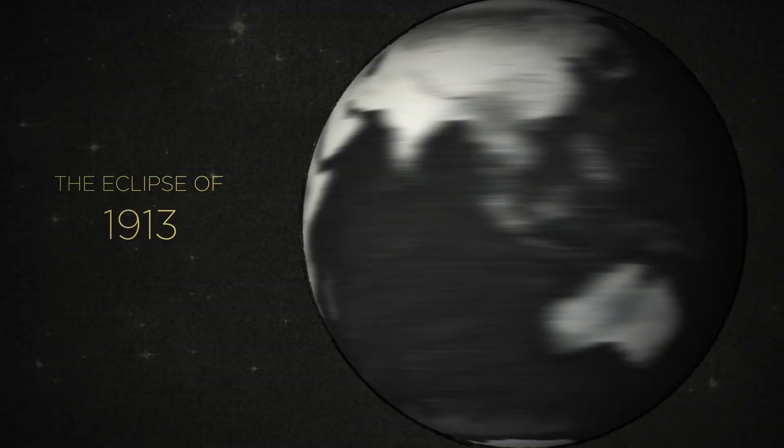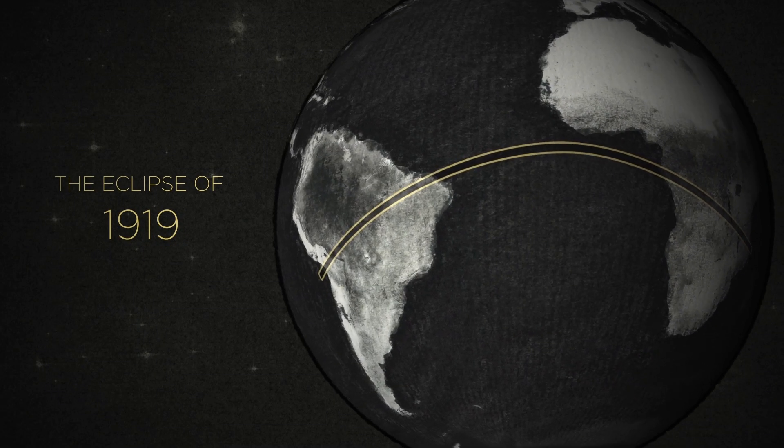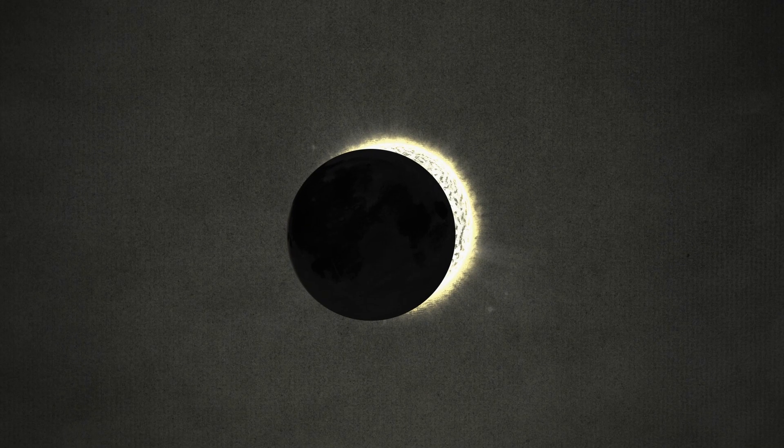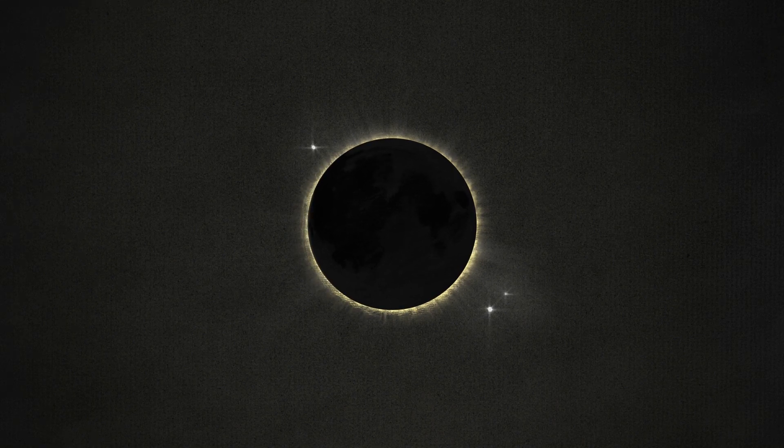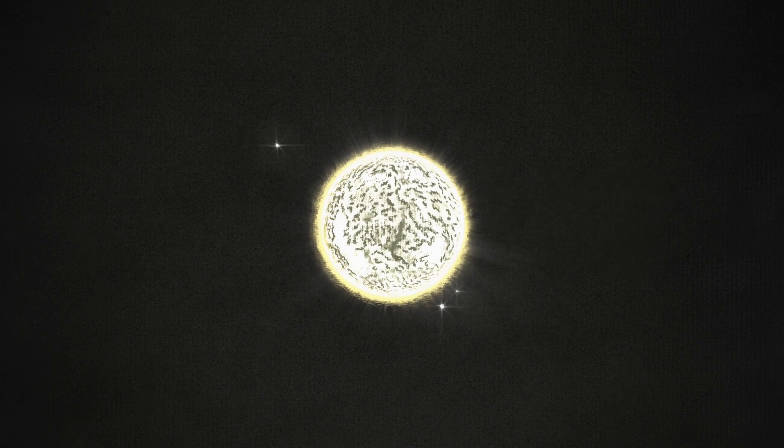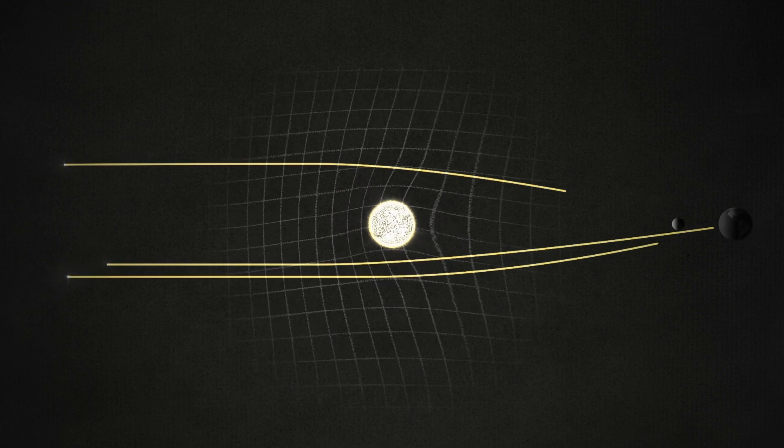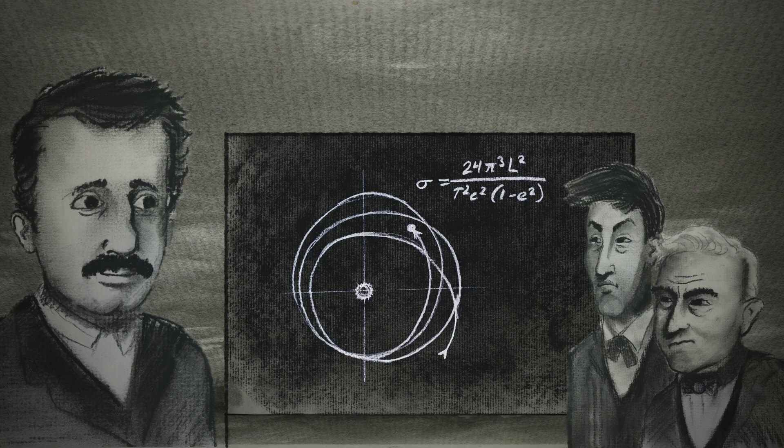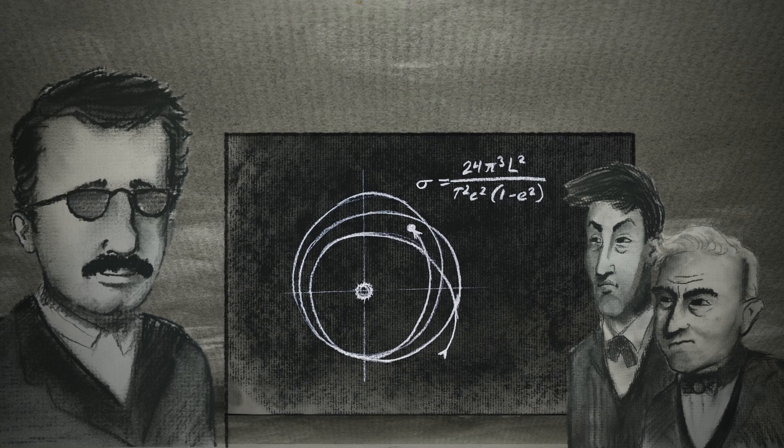And once again, an eclipse came in useful. In 1919, the darkened skies allowed scientists to see stars near the sun. And just as Einstein predicted, the sun's huge mass nudged the starlight off course. Those results made him an instant celebrity.